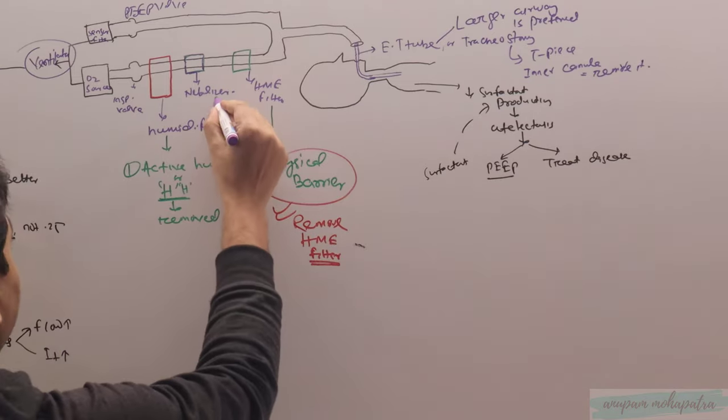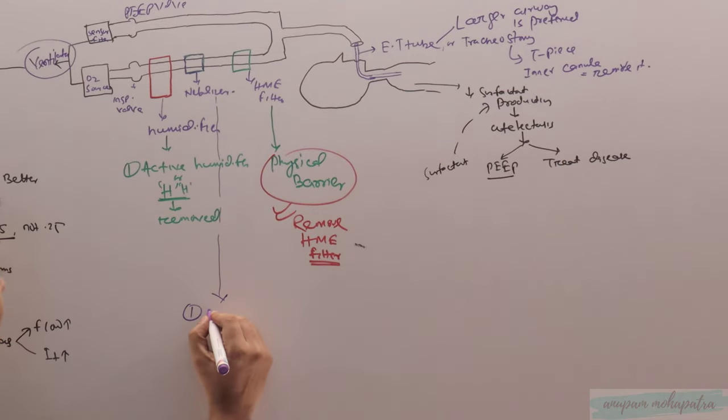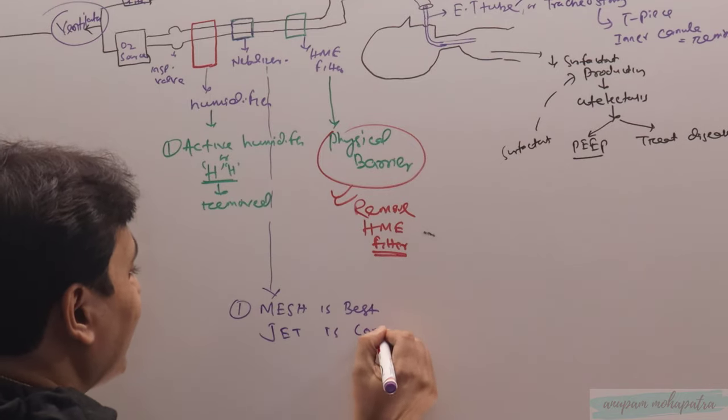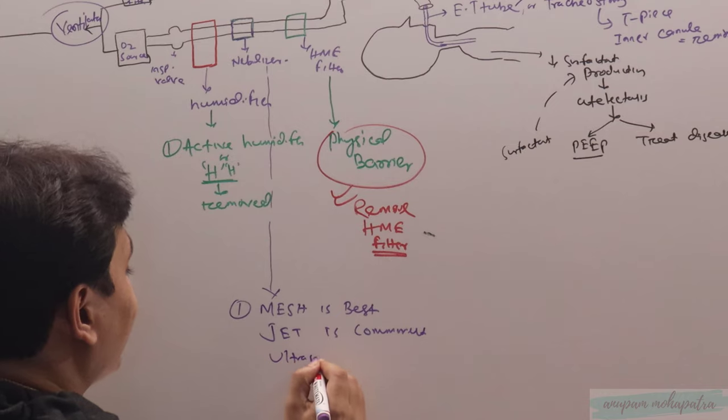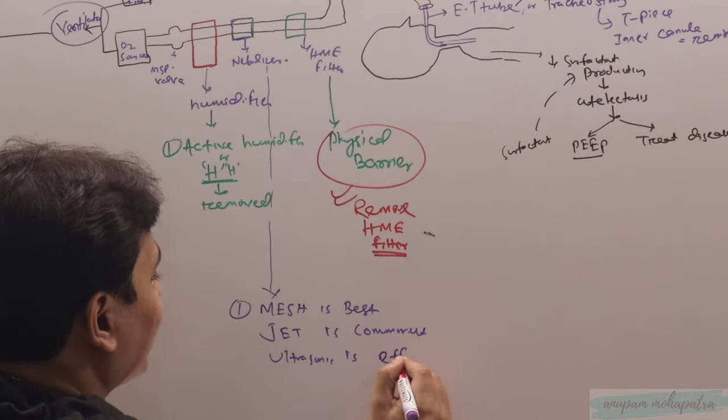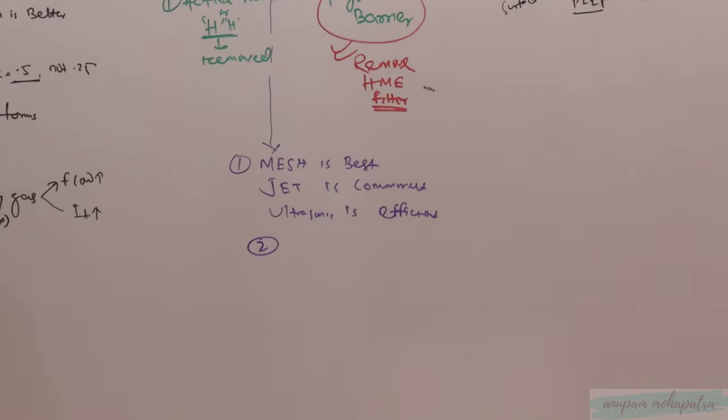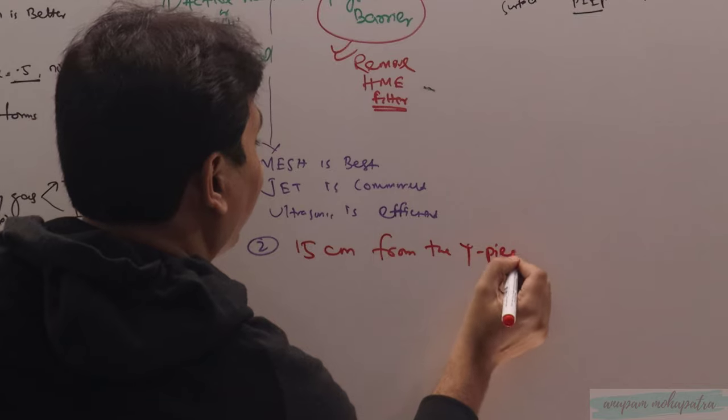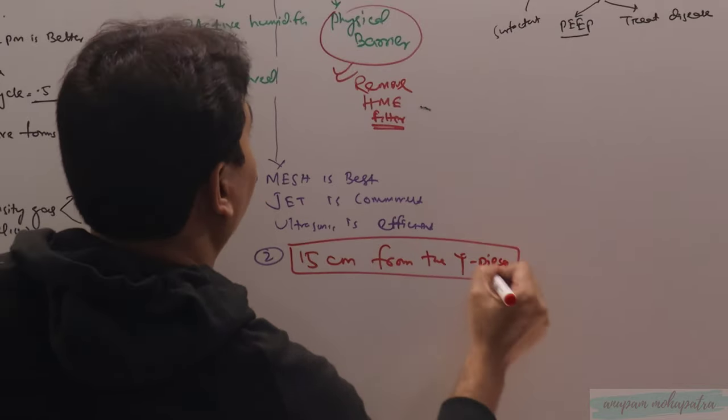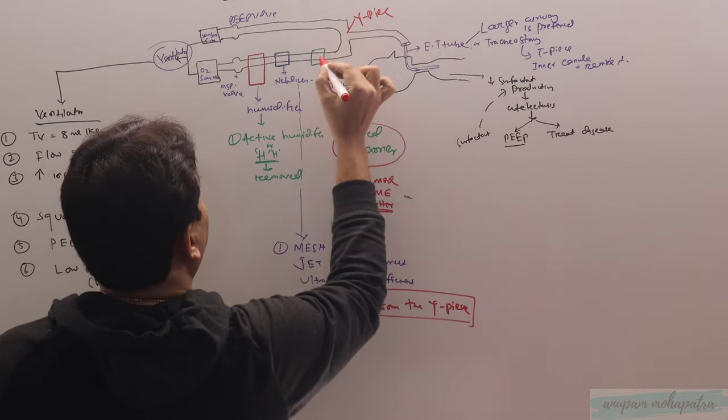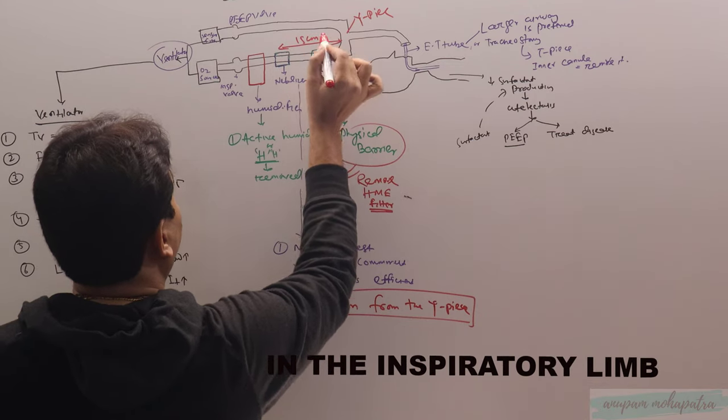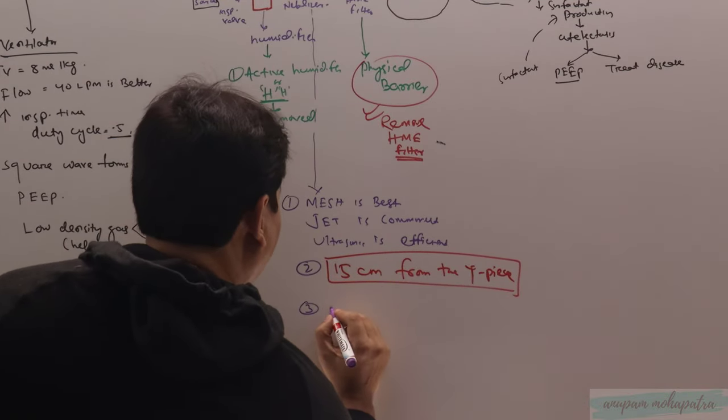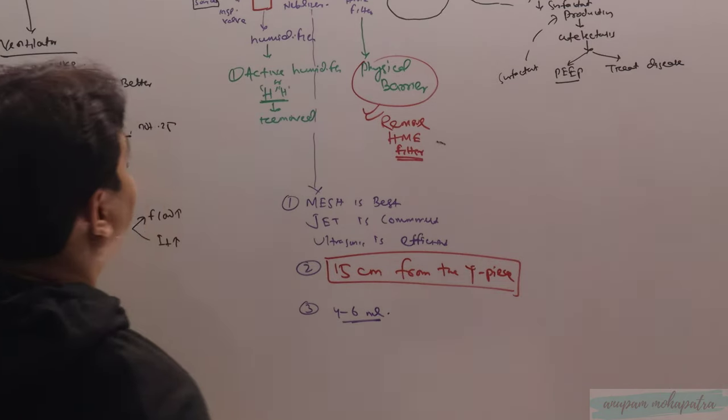Coming to the nebulizer per se: mesh is best, jet is commonest, ultrasonic is efficient. And it has to be positioned - this is very important - 15 centimeters from the Y-piece. This is the Y-piece, so the nebulizer will be at 15 centimeters from the Y-piece for maximizing the delivery. And the amount of liquid drug has to be 4 to 6 ml for optimal aerosolization.